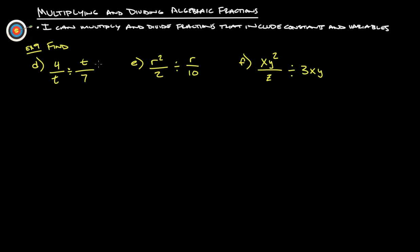Next set of examples, find 4 over t divided by t over 7. So we would simply do this by leaving the first one and then we find the reciprocal, just basically flip the second one over and multiply. So 7 over t. So 4 times 7 is 28 over t times t is t squared.